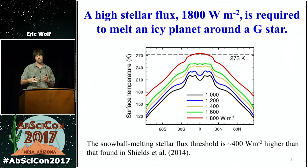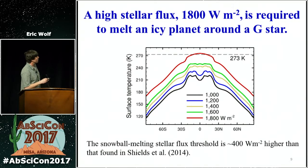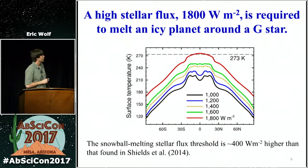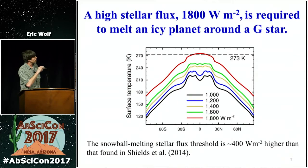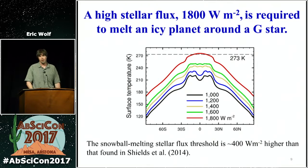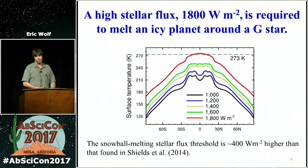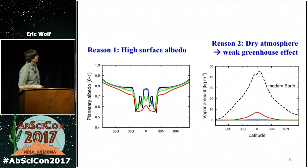With these improvements to the ice treatment, June found that for the Earth around the Sun, starting in a cold state, you would need a very high stellar flux to deglaciate — up to 1,800 watts per meter squared required to melt an icy planet around a G star. This is about 400 watts per meter squared higher than found in Shields et al. 2014. In this plot, June shows the zonal mean temperature of a cold-start snowball planet as a function of latitude for different stellar fluxes, and they're all cold until you get to 1,800 W/m². Then you just start getting a little bit of melt around the equator, and once you start opening up the sea ice, you open up the darker ocean, which is more effective at absorbing solar radiation, and you can melt the ice away.